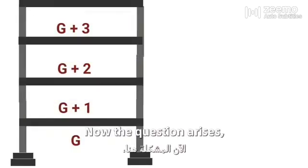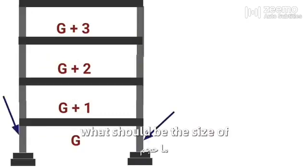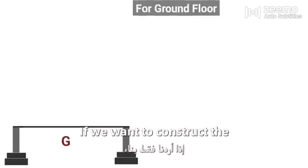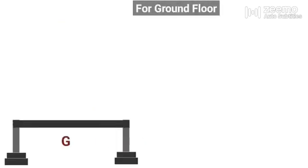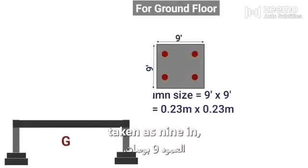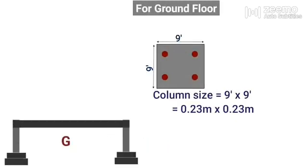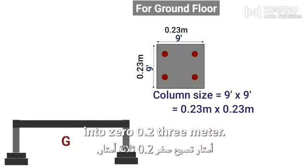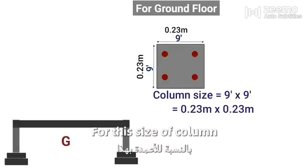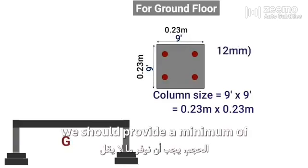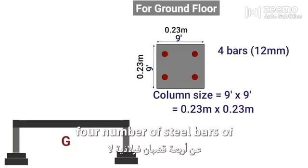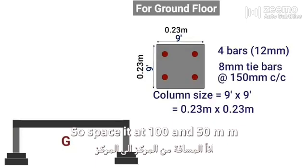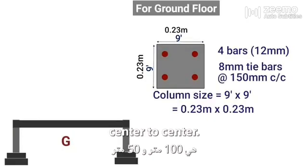The question arises: what should be the size of columns for a residential building? If we want to construct ground floor only, the column size can be taken as 9 inch x 9 inch or 0.23m x 0.23m. For this size of column, we should provide a minimum of 4 steel bars of minimum diameter 12mm, plus tie bars of size 8mm spaced at 150mm center to center.